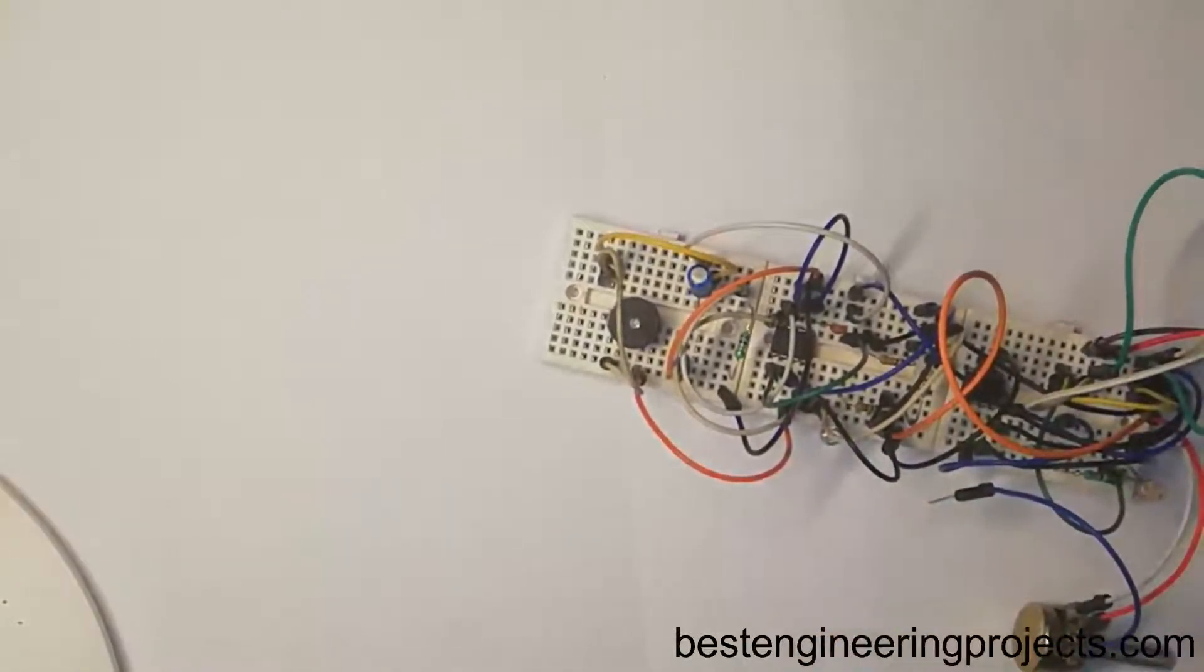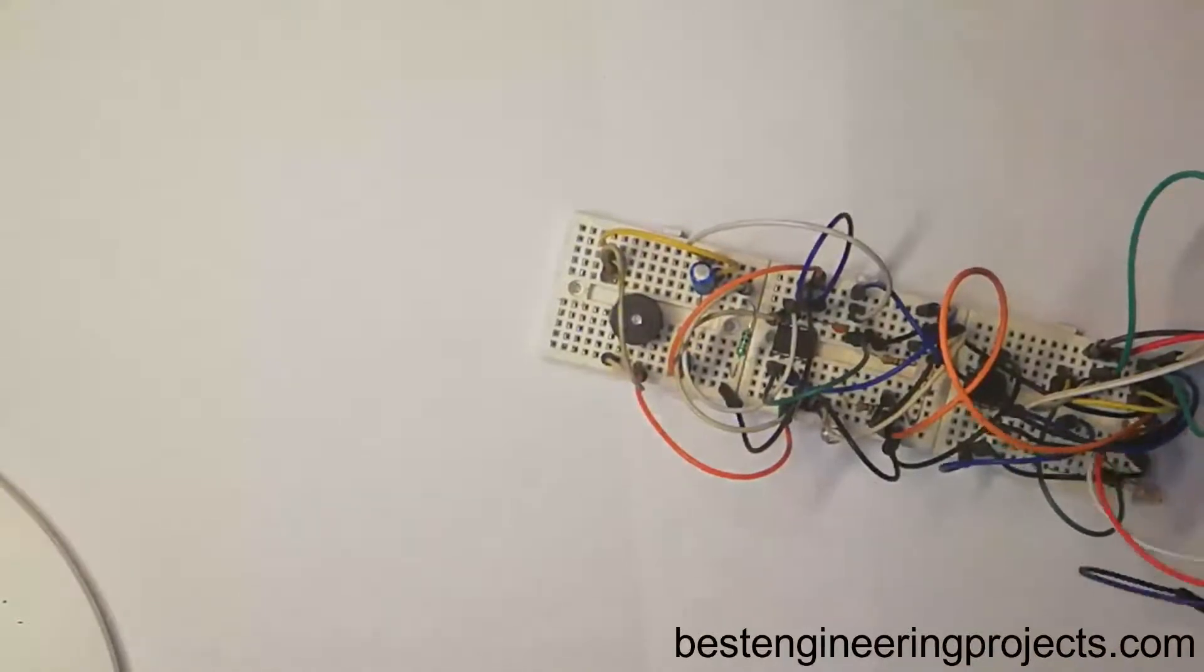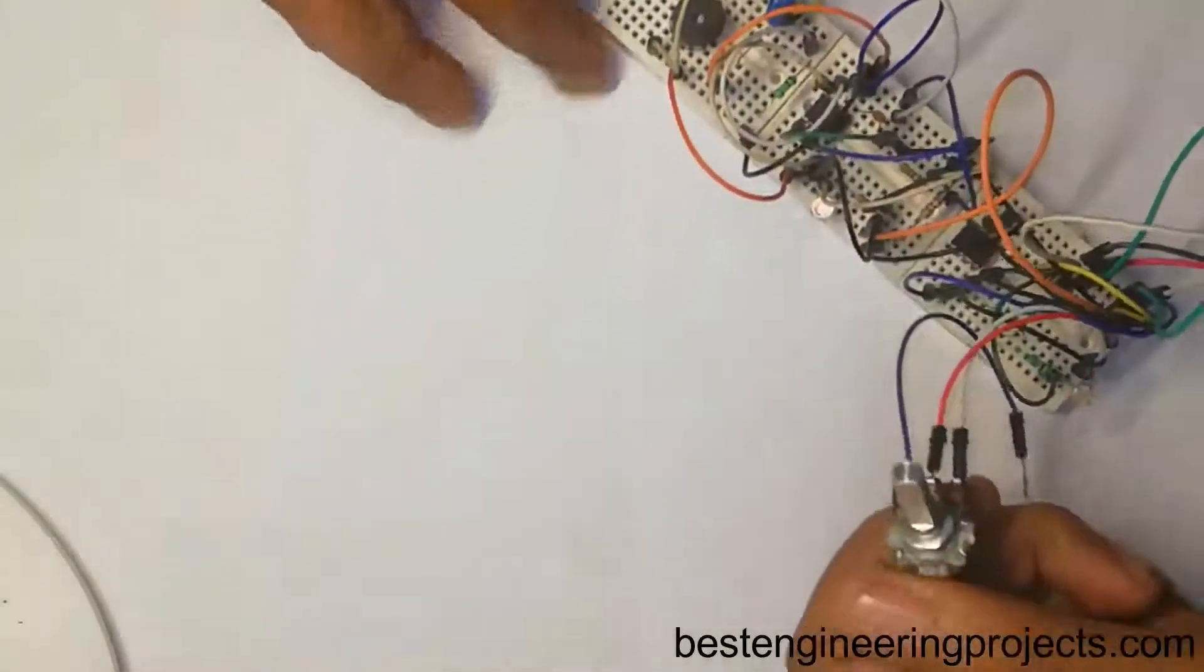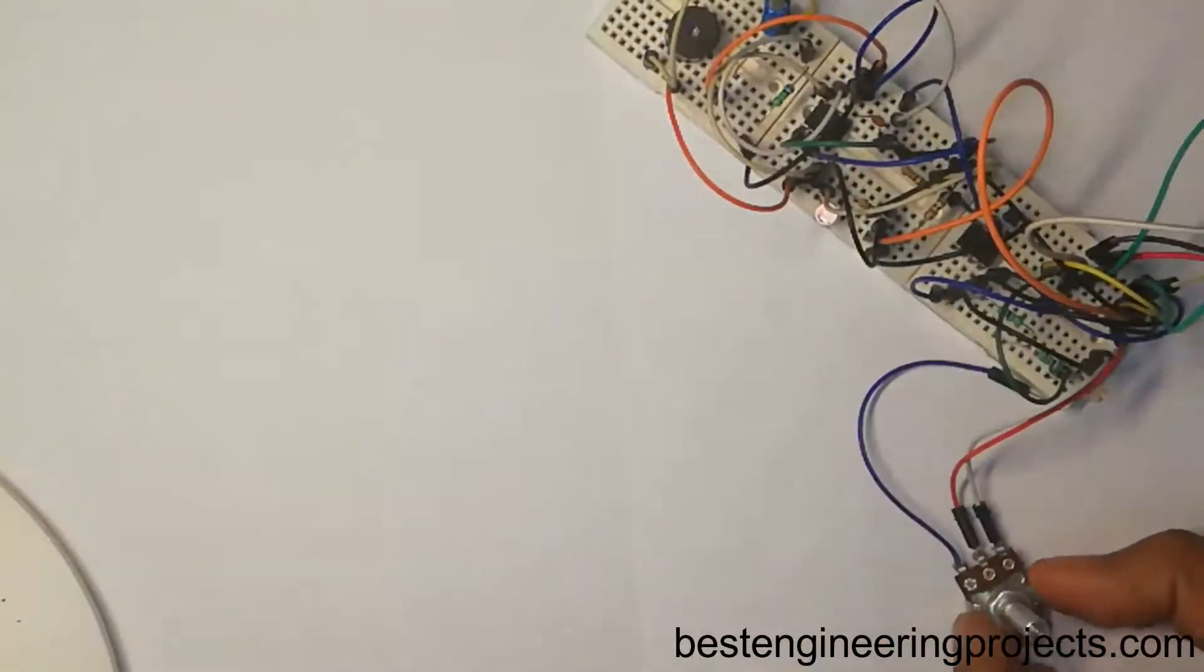The sensitivity of the LDR, that is at what light level or darkness the LED starts to glow or the buzzer starts to buzz, can be adjusted using this variable resistor RV1. You can see here, by this way you can adjust the sensitivity.